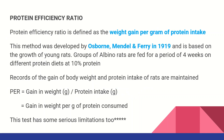Protein Efficiency Ratio. Weight gain per gram of protein is the index. Nutrition students study diet. Osborne, Mendel, and Ferry — proposed in 2019 — did the same thing with albino rats. The experiment runs similarly with protein and non-protein groups.